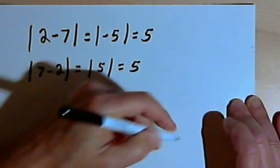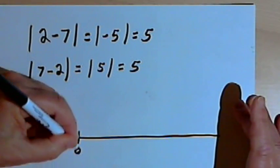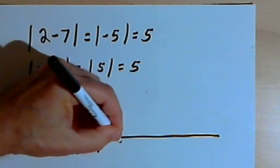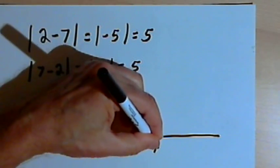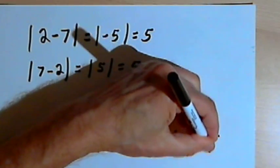Now in terms of a number line, we're still dealing with distance. So here's a number line. I'll put in a 1, 2, 3, 4, 5, 6, and 7.